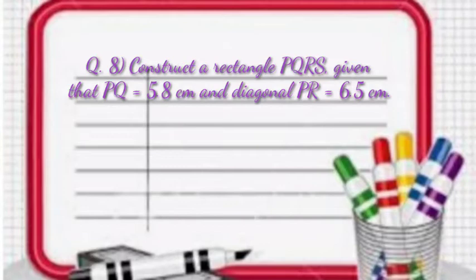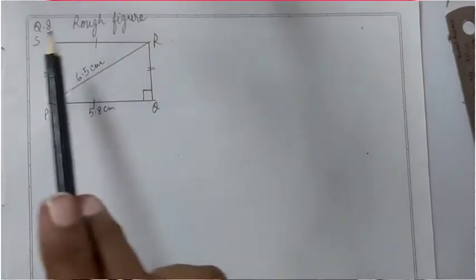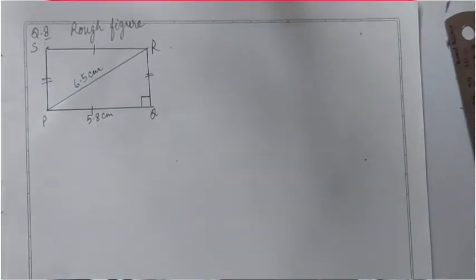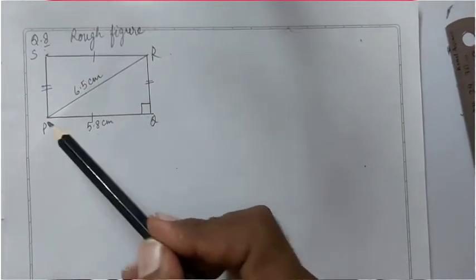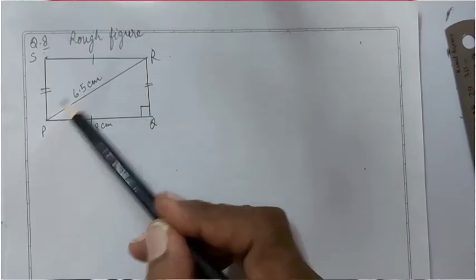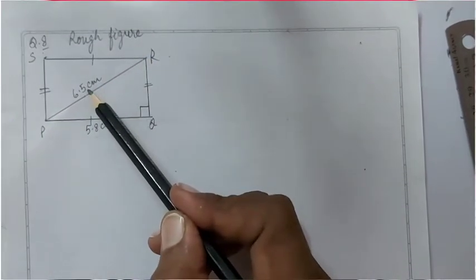Construct a rectangle PQRS given that PQ equal to 5.8 cm and diagonal PR equal to 6.5 cm. We have to construct PQRS rectangle where PQ equal to 5.8 cm, PR equal to 6.5 cm.